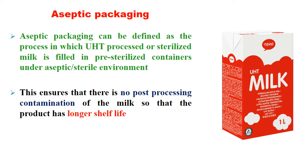We have discussed UHT processing, but along with that one important step is aseptic packaging, because the milk is already sterilized and has to be packed perfectly to have a long shelf life. The main concern is to avoid post-processing contamination. Aseptic packaging can be defined as the process in which UHT processed or sterilized milk is filled in pre-sterilized containers under an aseptic or sterile environment. This ensures there is no post-processing contamination of the milk, so that the product has a longer shelf life.